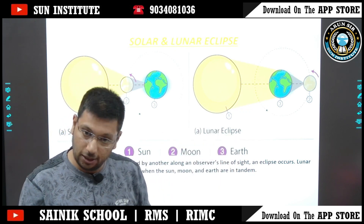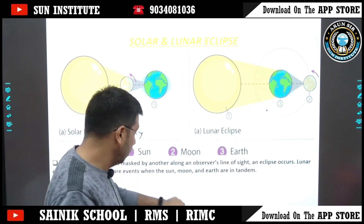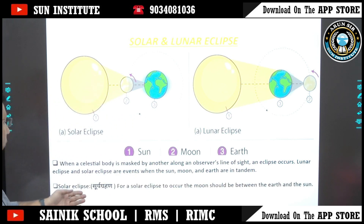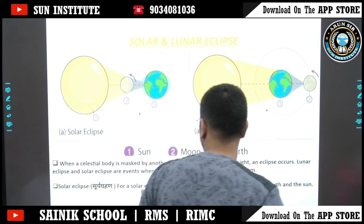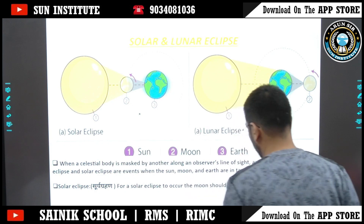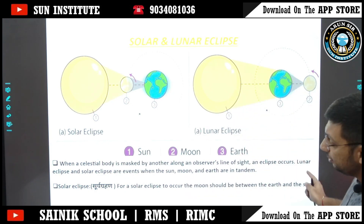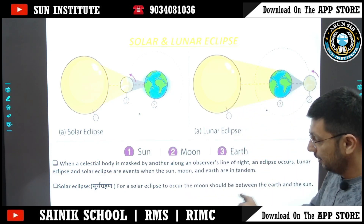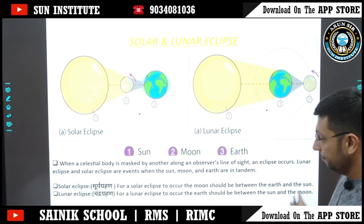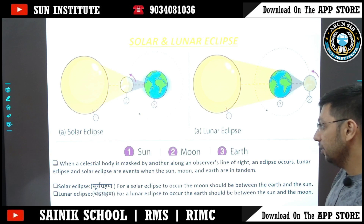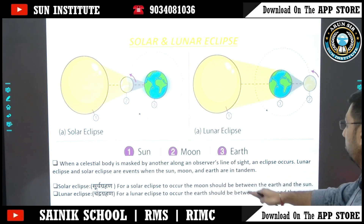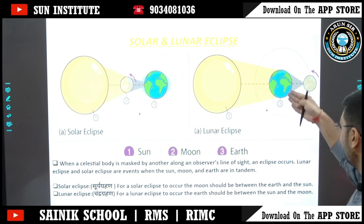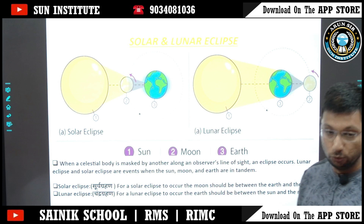Basic definition: solar eclipse — in Hindi we call it Surya Grahan. For a solar eclipse to occur, the Moon should be between the Earth and the Sun. And for a lunar eclipse — Chandra Grahan — for a lunar eclipse to occur, the Earth should be between the Sun and the Moon.